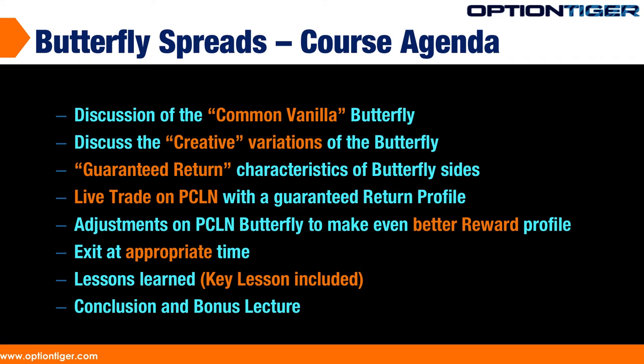Once we start discussing the creative variations of the butterfly, you'll see that these butterflies can be very powerful. We're going to look at broken wing butterflies, unbalanced butterflies, and uneven butterflies. Some butterflies can give you a guaranteed return on particular sides. We'll also look at a live trade on Priceline, which has one of those characteristics, then look at adjustments to that Priceline butterfly trade to make the reward profile even better. And of course, you want to exit at the appropriate time — there is a very key lesson learned and why we have to watch out for various things that can impact the markets.